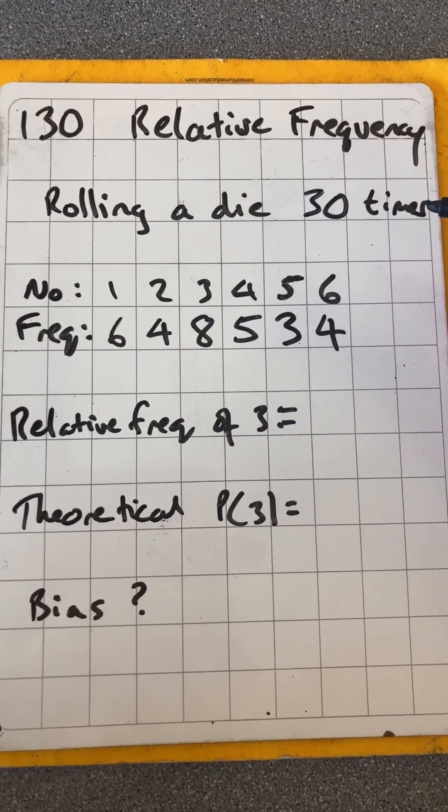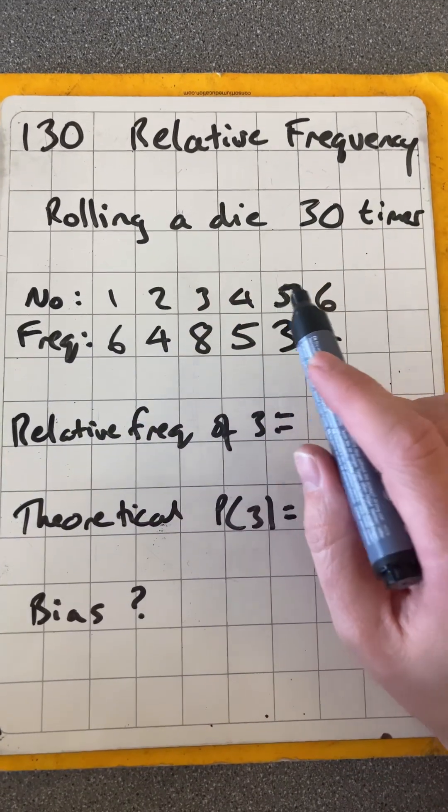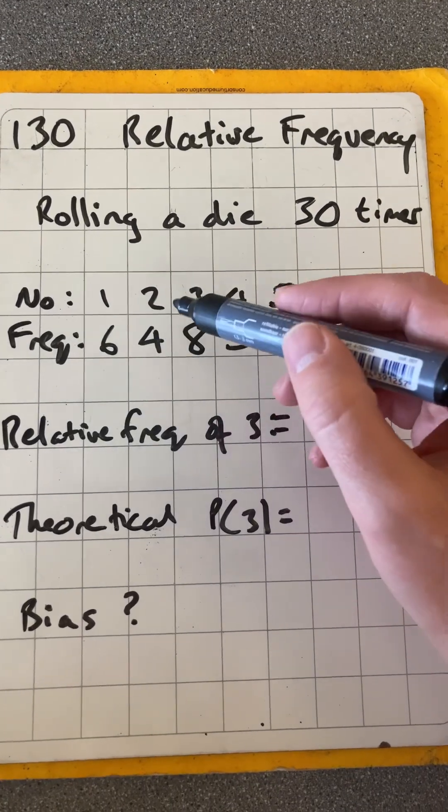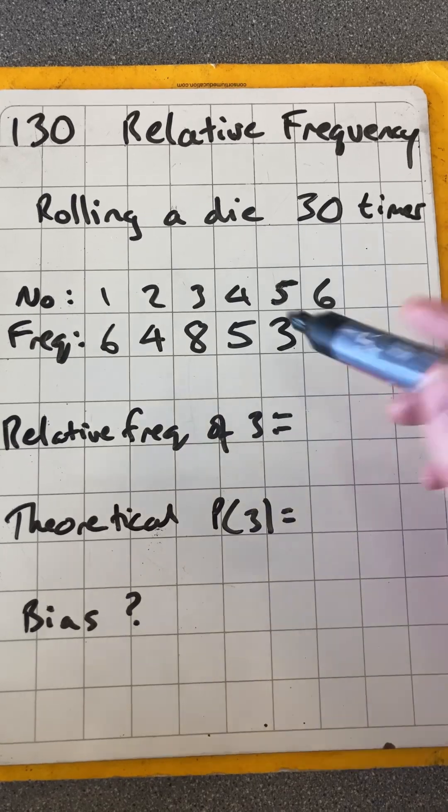So here we are rolling a die 30 times and the numbers 1, 2, 3, 4, 5, and 6 come out this many times. So I got the number 1 six times, 2 four times, 3 eight times, 4 five times, 5 three times, and 6 four times.